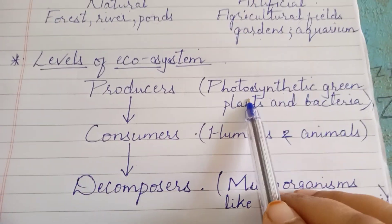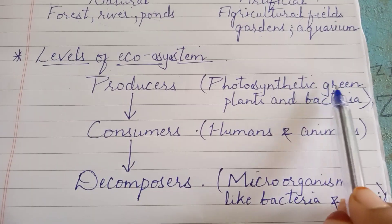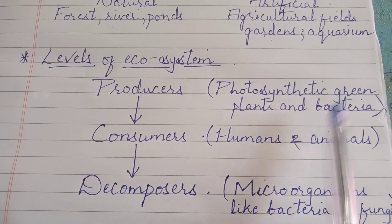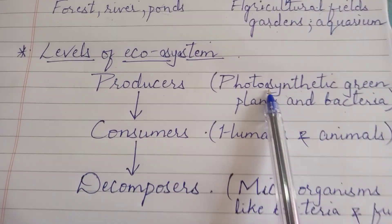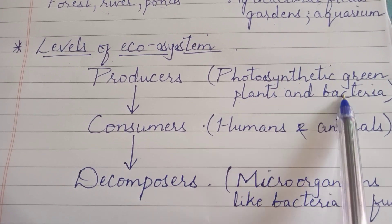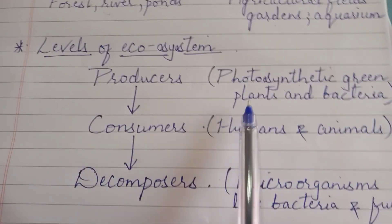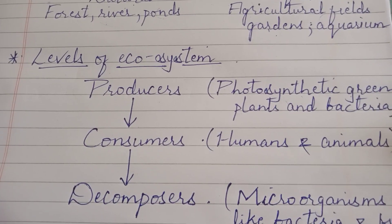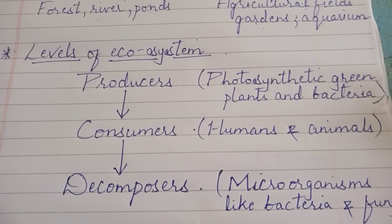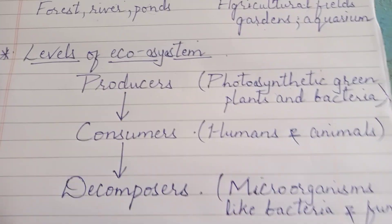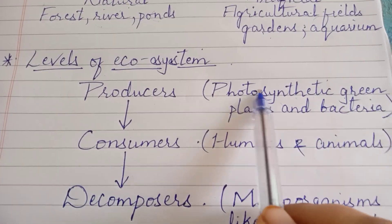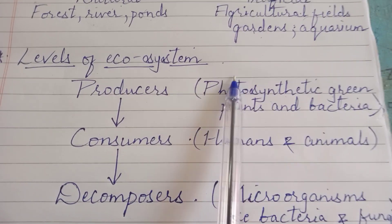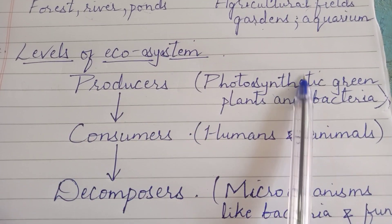Producers include green plants and some green algae. You have already studied algae, bacteria, and fungi — primitive organisms — in your ninth standard. Some photosynthetic green plants and bacteria are included in the category of producers. Their responsibility in the environment is to utilize sunlight, water, and chlorophyll to prepare food — starch — through different chemical activities in their body. That is their prime duty. Once they prepare the food — fruits, vegetables — their job is done.